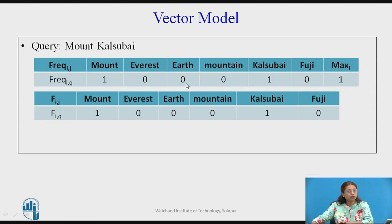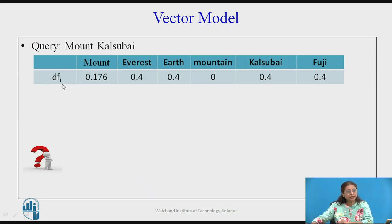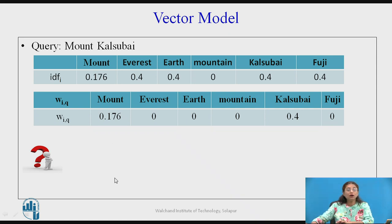In the same manner we calculate the raw frequency for the query. Assume our query is 'mount Kalsubai', where 'mount' and 'Kalsubai' each occur only once and the remaining terms are 0. Maximum is 1, so raw frequency and normalized frequency are the same. The IDF factor is the same as calculated for the documents, and then we calculate the weight vector for the query. Once we have the weight vectors for documents and query, we can calculate the degree of similarity.